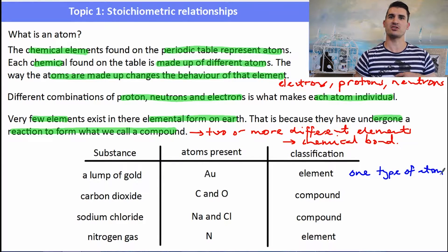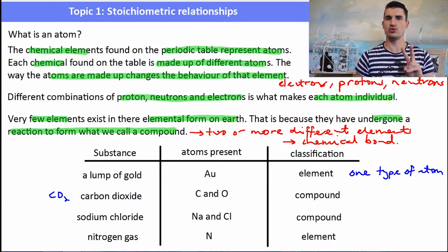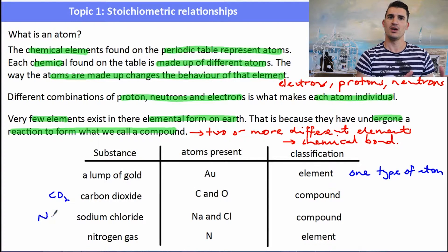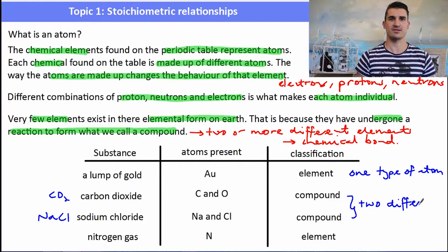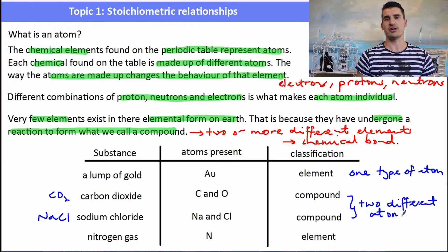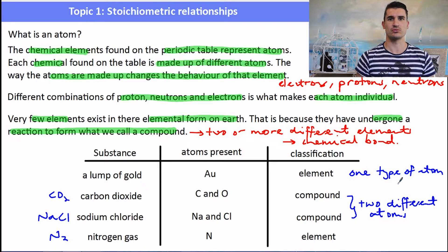If we have something like carbon dioxide, which is something that we breathe out, well that contains carbon and oxygen and the formula is CO2. Now because that's got two different types of atoms, it is classified as a compound. Sodium chloride, NaCl, contains again two different types of atoms — table salt — so that would be classified as a compound as well. Now nitrogen gas has the formula N2. That consists of only nitrogen atoms, so even though there's two of them, it is only nitrogen atoms, so it is elemental nitrogen.